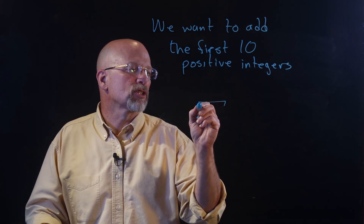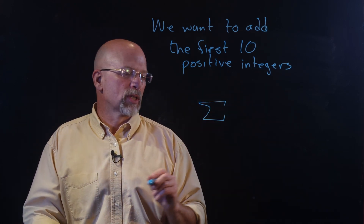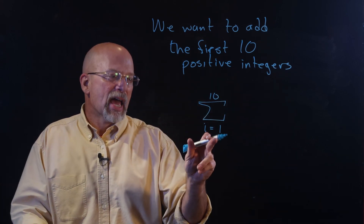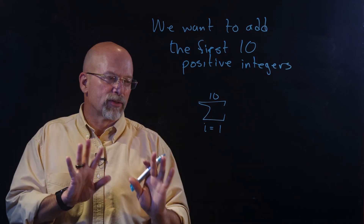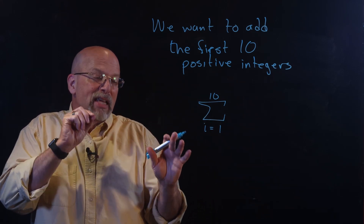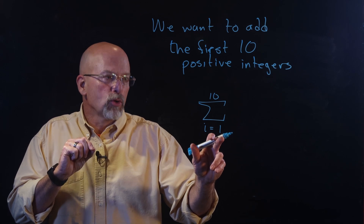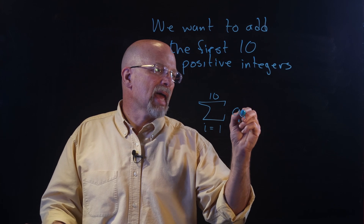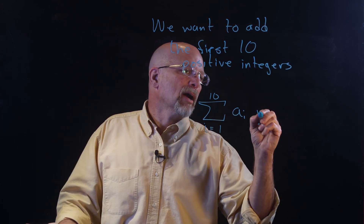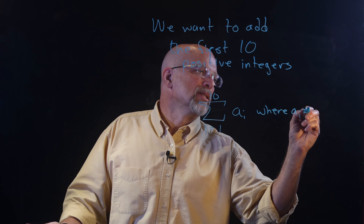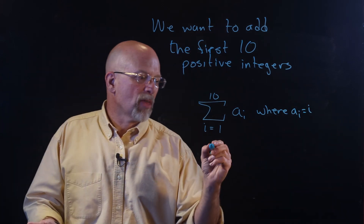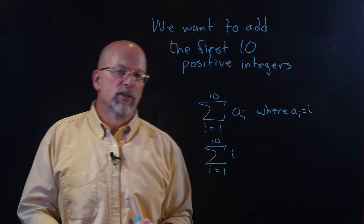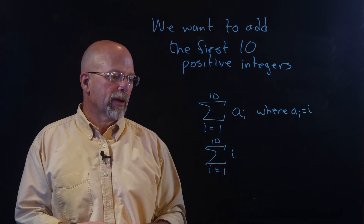Using this notation that we have just been talking about, where we use the capital sigma, we go from i equals one up to 10 — these are inclusive, so every i that is greater than or equal to one and less than or equal to 10. What we want to do is add a sub i, where a sub i is equal to i. So another way of doing this is to just simply say the summation for i equals 1 to 10 of i.